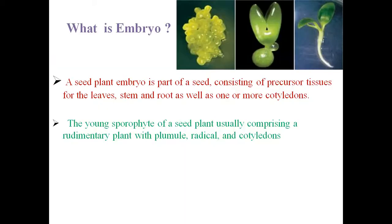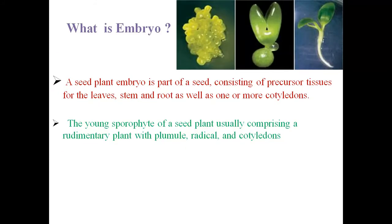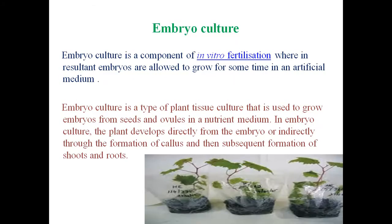Before going to embryo culture, we need to know what an embryo is. An embryo is a seed plant — it is a part of a seed consisting of precursor tissues for the leaves, stems, and roots, as well as one or more cotyledons. It is the young sporophyte of a seed plant, usually comprising a rudimentary plant with plumule, radicle, and cotyledons.